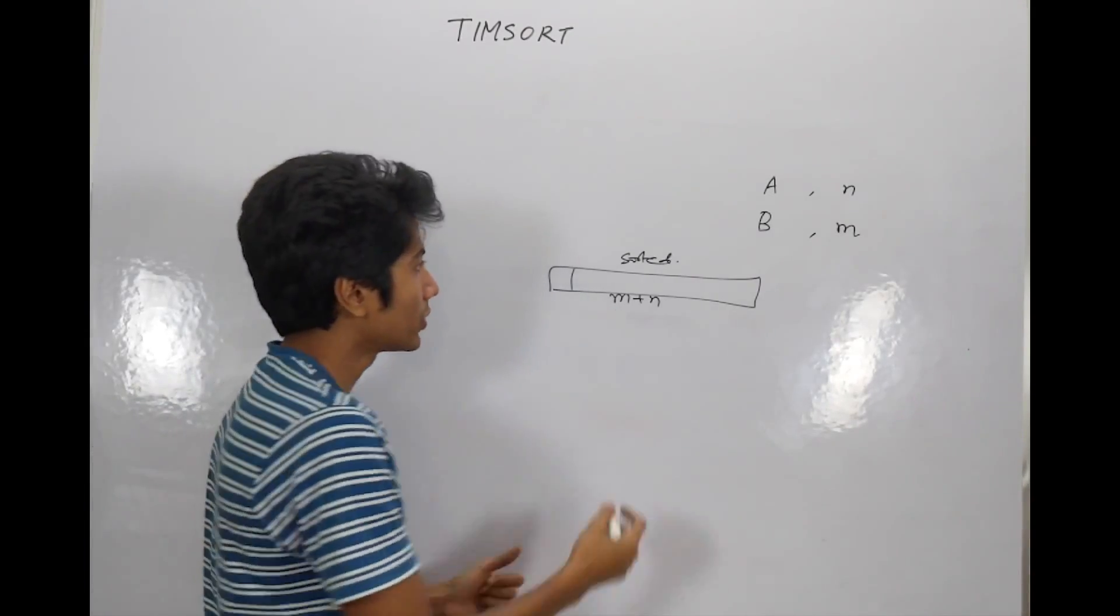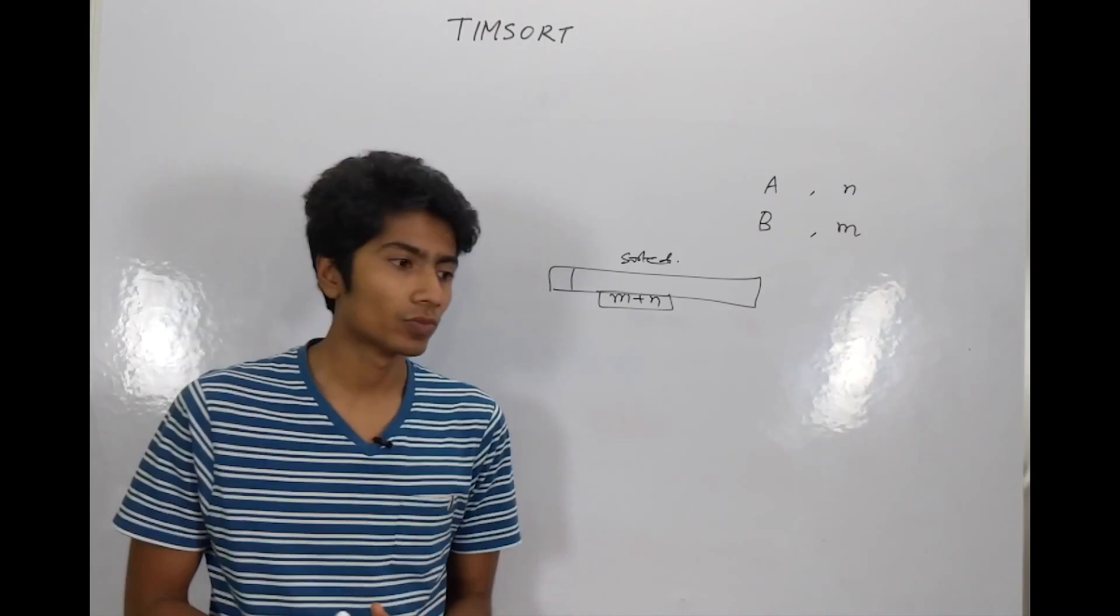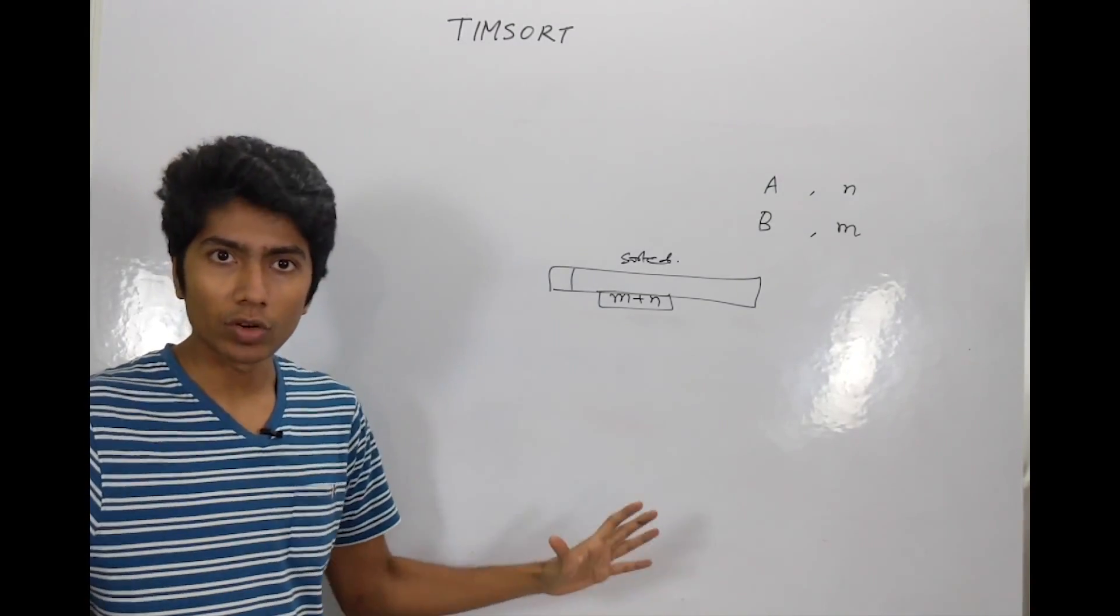The temporary space required for this, as you can see, is M plus N, which is pretty large. This is the most efficient way in which you can do a merge sort.